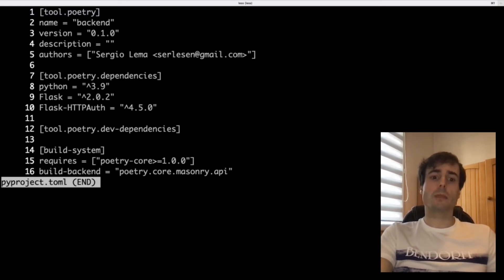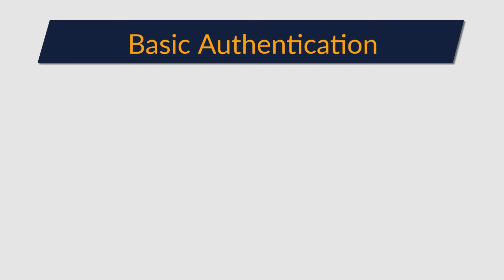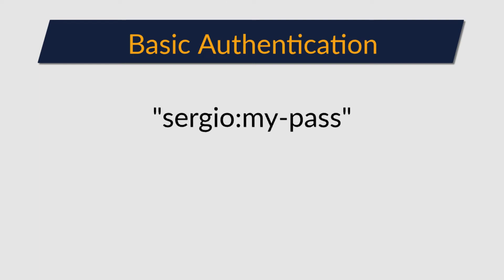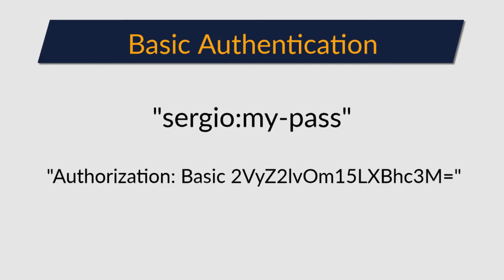I will start with the basic authentication. The basic authentication consists in sending the username and password for each request. They will be encoded in base64 and sent in the authorization header. This is one of the simplest authentication methods, because it sends practically the credentials visible to anyone.